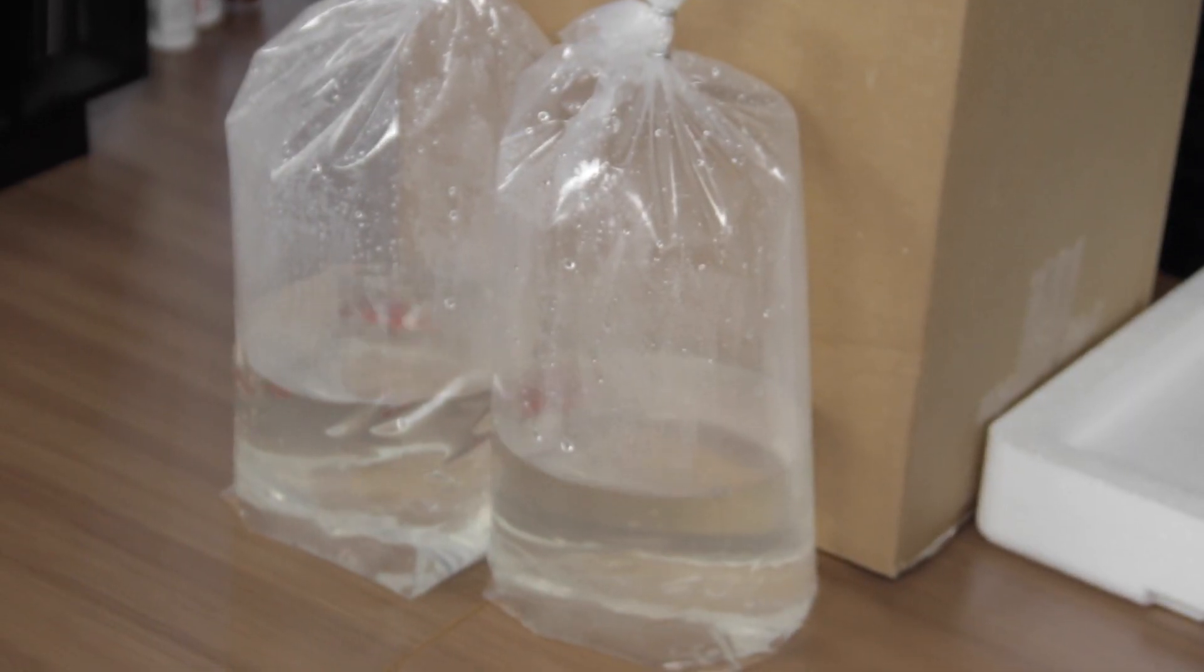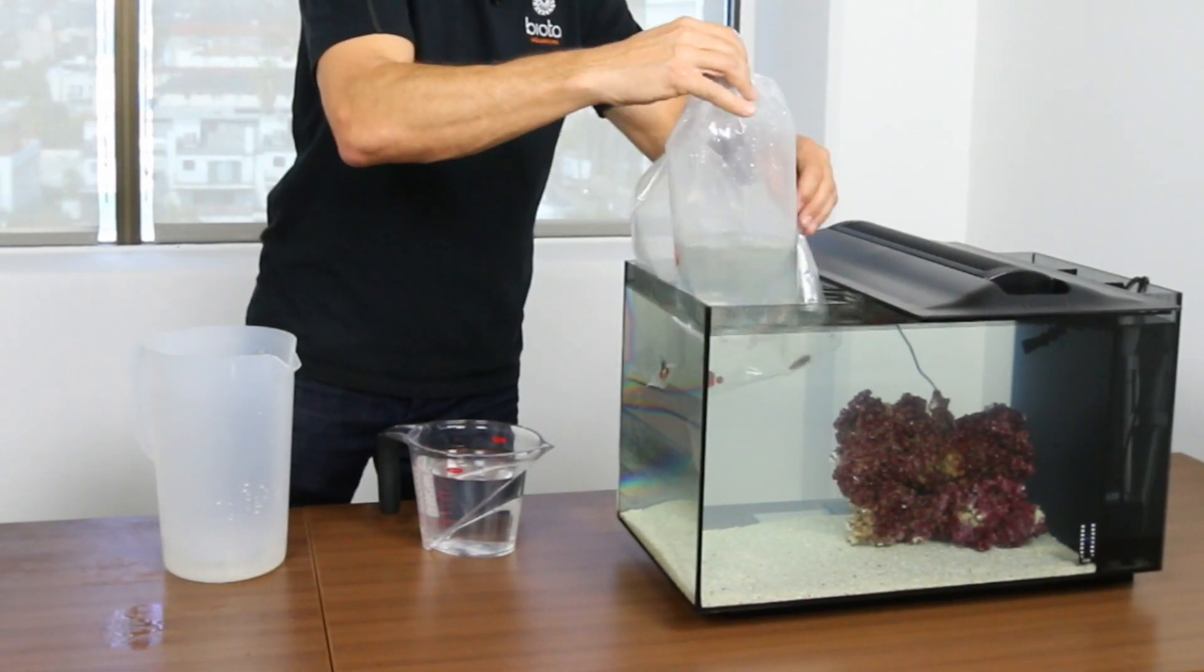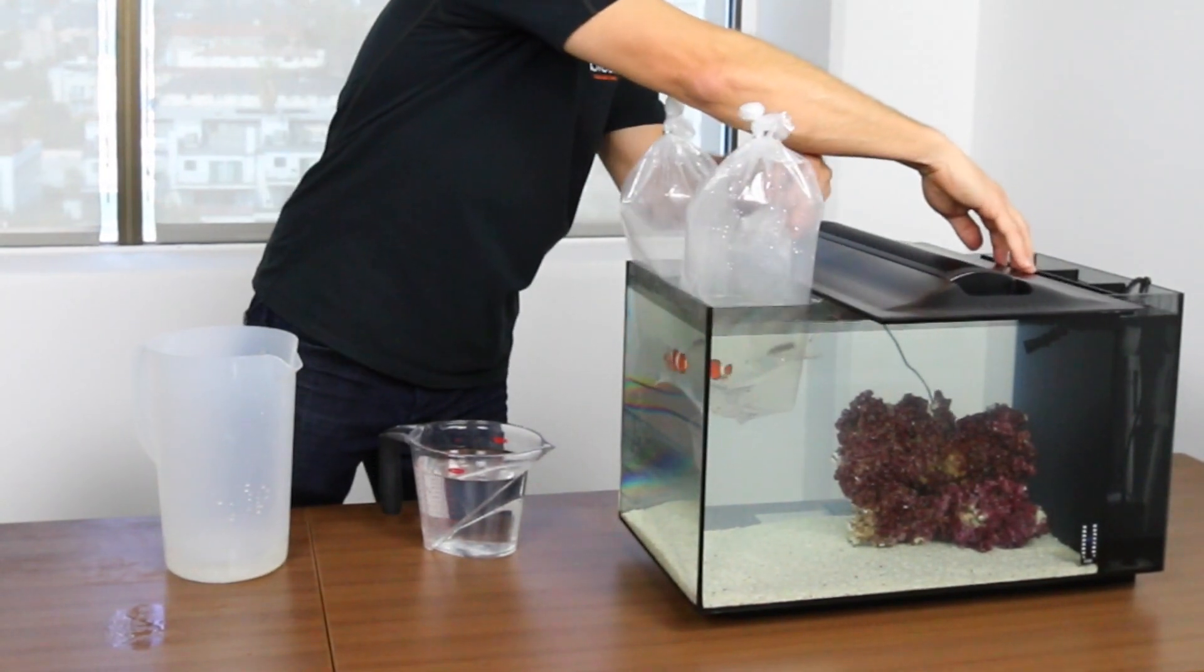Two bags will contain the clownfish and one will have the rainford goby. Place the bags on the surface of the water and use the tank lid to hold them in place.